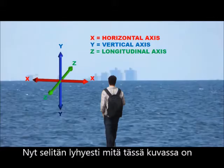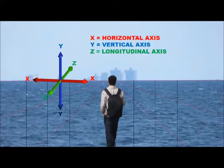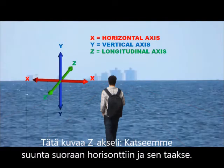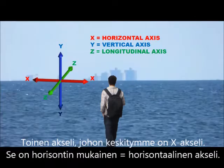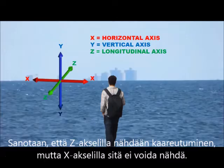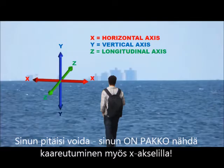To explain this illustration briefly: when they say they see curvature — when they're looking at buildings and the lower parts disappear and they're calling that curvature — that would be on the z-axis, from our eyes to the horizon and beyond. The x-axis is the horizon, our horizontal axis, and that's the one we don't see any curvature on. They claim to see it on the z, but you should and you must see it on the x, and yet we do not.